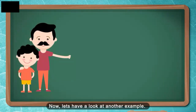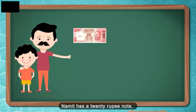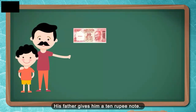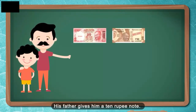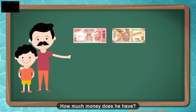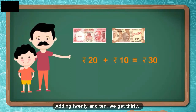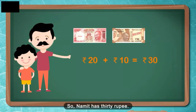Now let us have a look at another example. Namit has a 20 rupee note. His father gives him a 10 rupee note. How much money does he have? Adding 20 and 10, we get 30. So, Namit has 30 rupees.